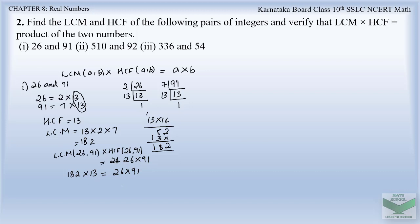Let us multiply and check whether the values are equal. Multiplying 182 × 13 gives 2366. Similarly, 26 × 91 also gives 2366. So the left-hand side equals the right-hand side, and we have proved that LCM × HCF of two numbers is equal to the product of those numbers.